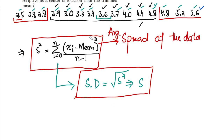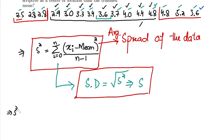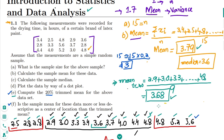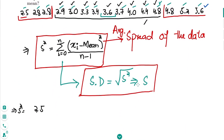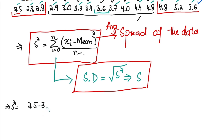Now for the same data set we have to find the variance and standard deviation. So for s-squared, the data we have — the first point is 2.5. We already found the mean of our data, which is 3.79. So I have to subtract this mean from each point: 2.5 minus 3.79 and then square it. The second point is 2.8, so 2.8 minus 3.79, squared.